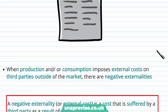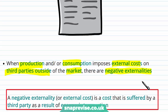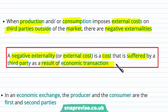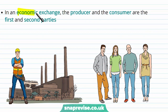When production or consumption imposes an external cost on third parties outside of the market or from the exchange, there are negative externalities. A negative externality, or external cost, is a cost that is suffered by a third party as a result of economic transactions.